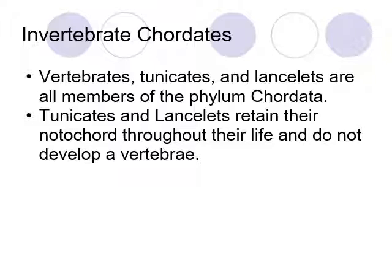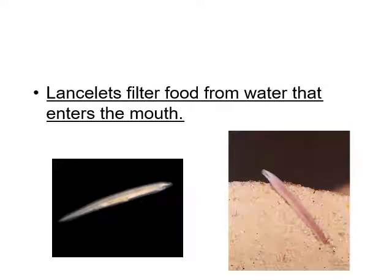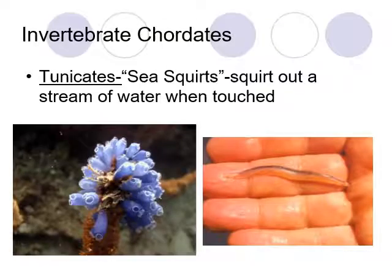Some invertebrate chordates — ones without a full backbone — include tunicates and lancelets. These organisms retain their notochord throughout their life but do not develop a full backbone, so the spinal cord lacks bone around it for protection. A lancelet burrows into sand, filters water through its mouth for food, and remains hidden most of the time. The tunicate, sometimes called a sea squirt, squirts out a stream of water when touched, which it uses to move itself.